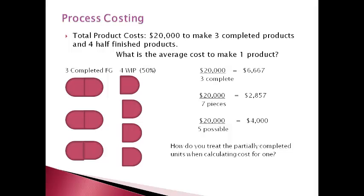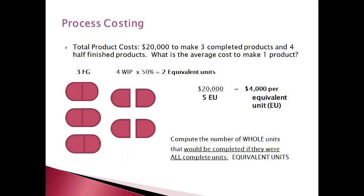The key question is how do you treat the partially completed units when calculating the cost for one? Process costing uses the last scenario and computes a cost per equivalent unit and then values inventory in terms of equivalent units. The three that were finished are added to the two that would be finished if all parts were considered together as whole units to get to five units. In this case, there are five equivalent units — three finished plus the four at 50% to equal two more.